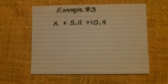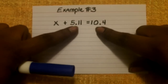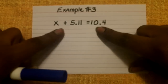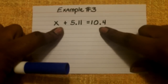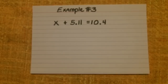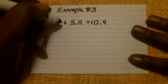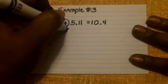One more example. Sometimes you'll be given decimals, and that's quite all right — the steps still remain the same. Step one: simplify each expression. Both expressions have already been simplified; we can't combine 5.11 and X since they're not like terms, and there's only one term, so it can't be simplified further. Step two: do addition or subtraction. In this equation, the operation being shown is addition, so the inverse of that would be subtraction.